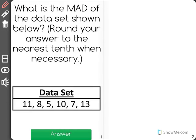What is the MAD of the data set shown below? Round your answer to the nearest tenth when necessary. Now the MAD stands for the mean absolute deviation, and there are several steps to finding this.